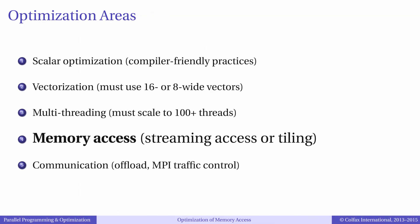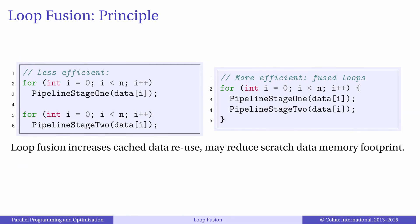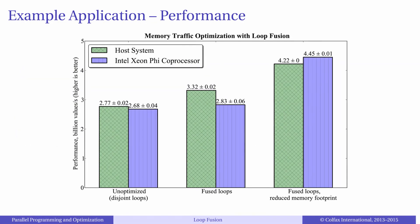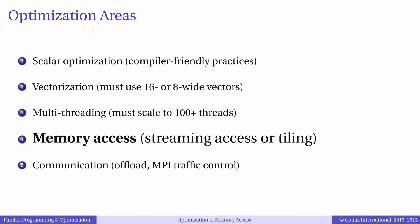This concludes the discussion of memory traffic optimization in this course. In our book you can find an additional topic of memory traffic optimization — loop fusion — which essentially is also an optimization of the locality of data access in time. Usually, when scalar tuning, vectorization tuning, and multi-threaded optimization is done, memory traffic optimization becomes very important for performance in Intel parallel platforms.